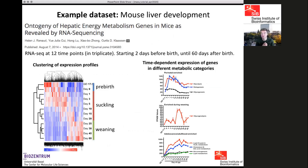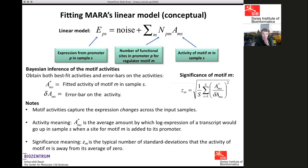A question was raised: in the linear model, is the activity of each transcription factor assumed independent from the others, or are dependencies between motifs modeled?